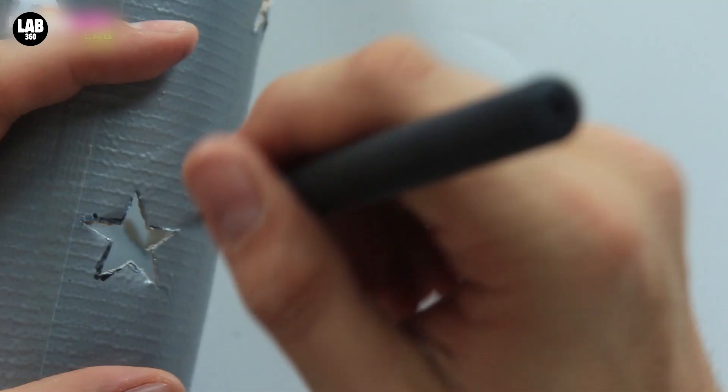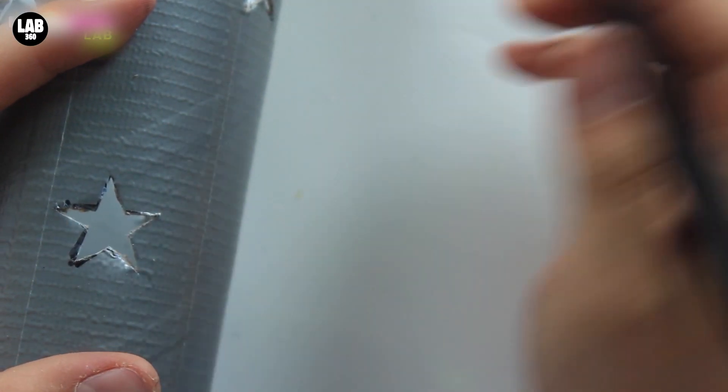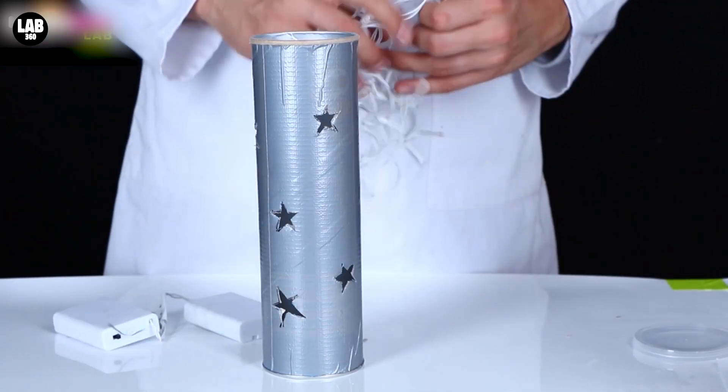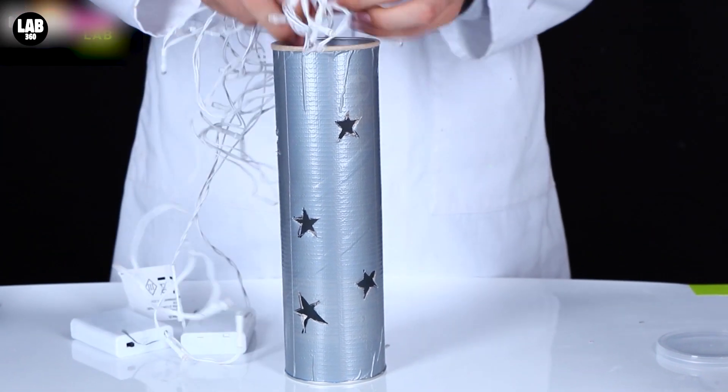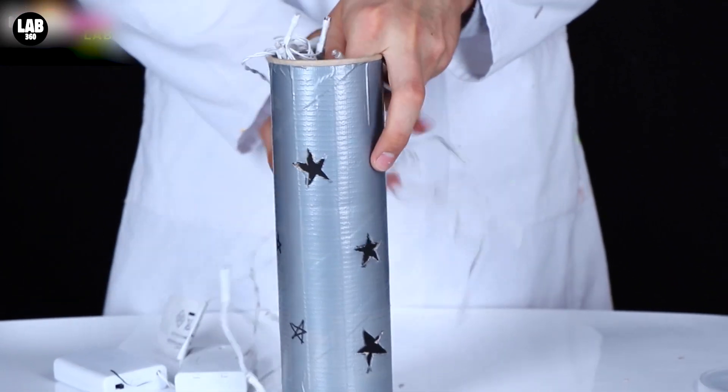Now I'm going to use the Stanley knife to carefully cut out my shapes. I've also got this craft knife, which helps me to cut more delicately. Once you've cut out enough shapes,